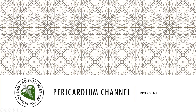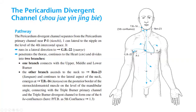Let's discuss the divergent channel, pericardium channel. Pathway: the pericardium divergent channel separates from the pericardium primary channel near P1, one cun lateral to the nipple from the level of the front intercostal space. It runs in the lateral direction to GB22, penetrates the thorax, continues to the heart, and divides into two branches.